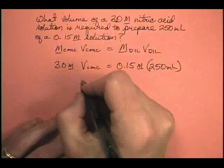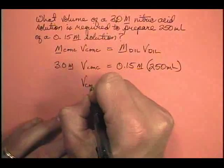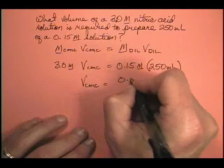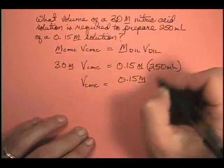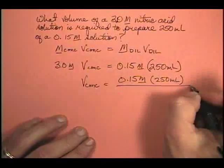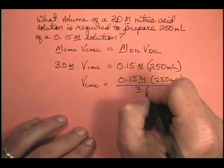Well we use our handy-dandy algebra and we know that the volume of the concentrate is equal to 0.15 molar times 250 milliliters divided by 3.0.